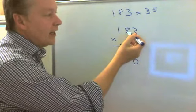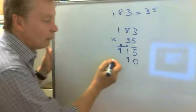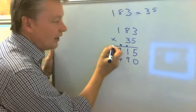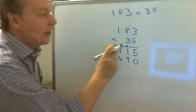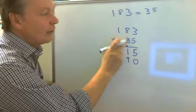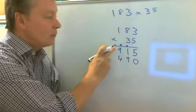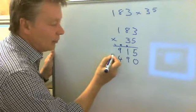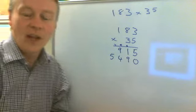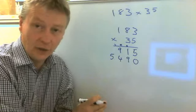Then I've got 3 times 8, which is 24. So I write down the 4 and I carry the 2. Then finally, I've got 3 times 1, which is 3, plus the 2 which I carried over, and that will be 5. And again, I've made sure that I've kept everything in the correct columns.